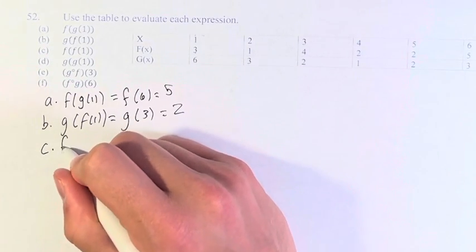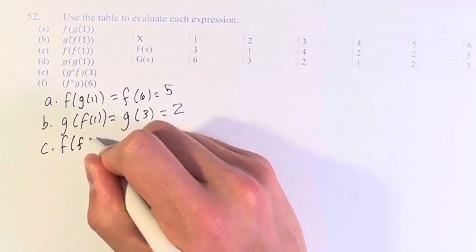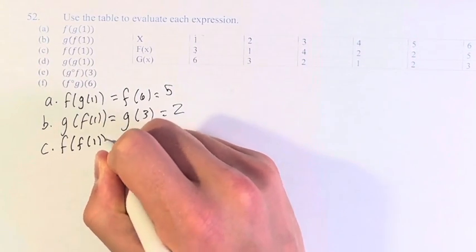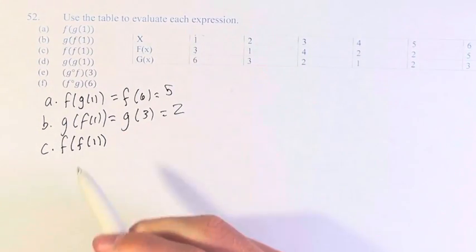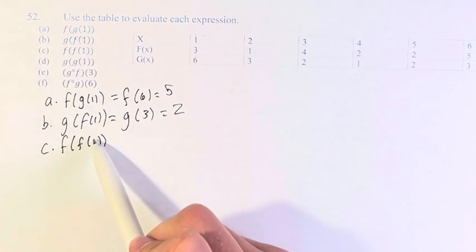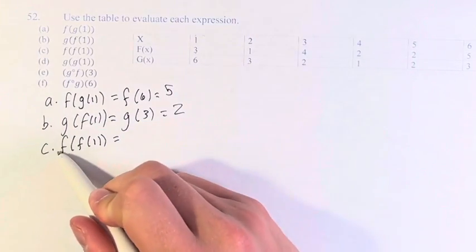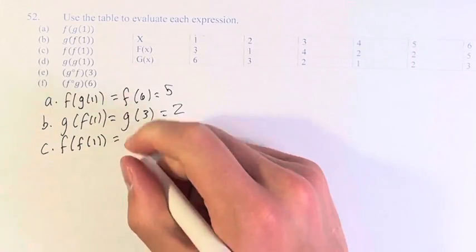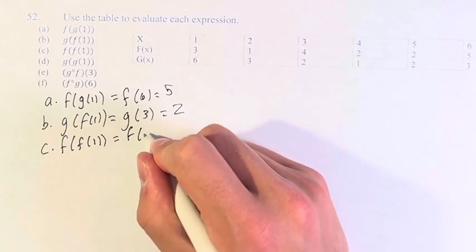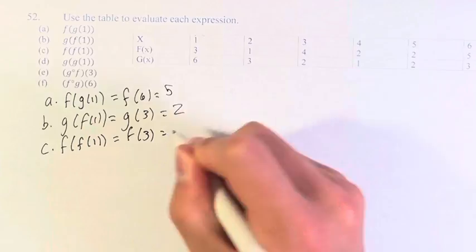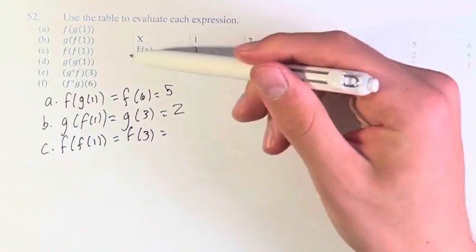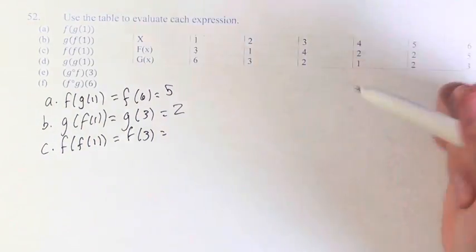g of 3 going down in the table is 2. Next, we have f of f of 1. f of 1, we just found, is equal to 3. So this is f of 3, which we can find is equal to 4.